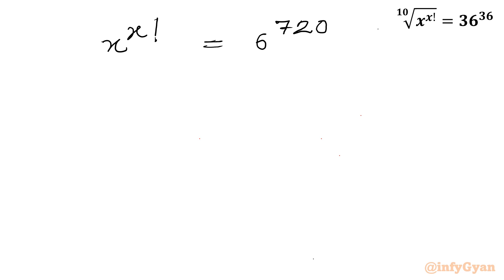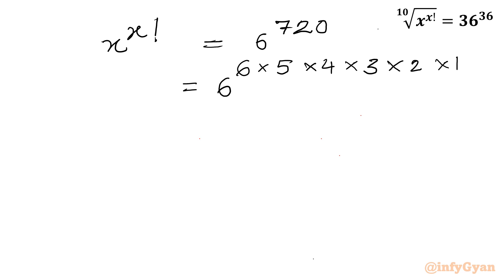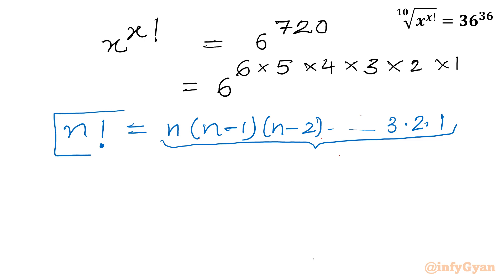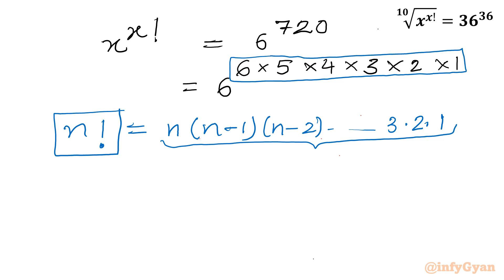Now I can write 720 as 6 × 5 × 4 × 3 × 2 × 1. By the definition of factorial — n factorial is the product of all numbers from n down to 1 — the product of all numbers from 1 to 6 is 6 factorial. So we can write: x raised to the power x factorial equals 6 raised to the power 6 factorial.